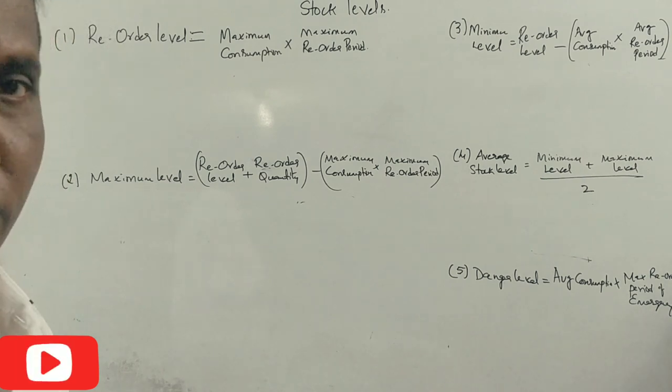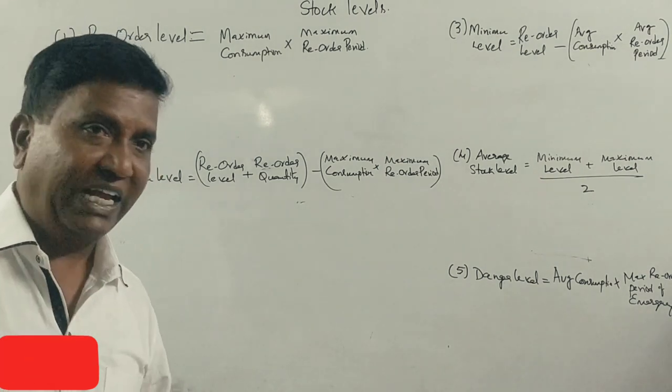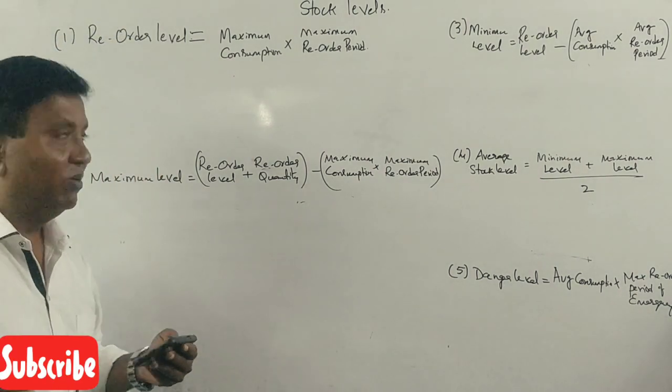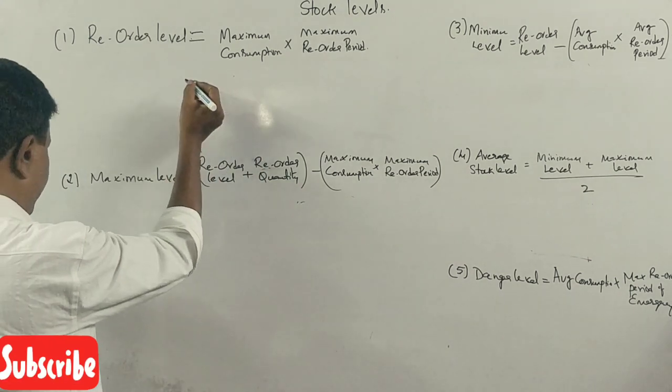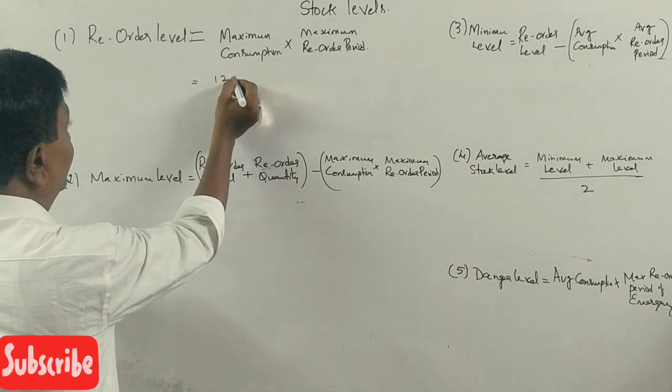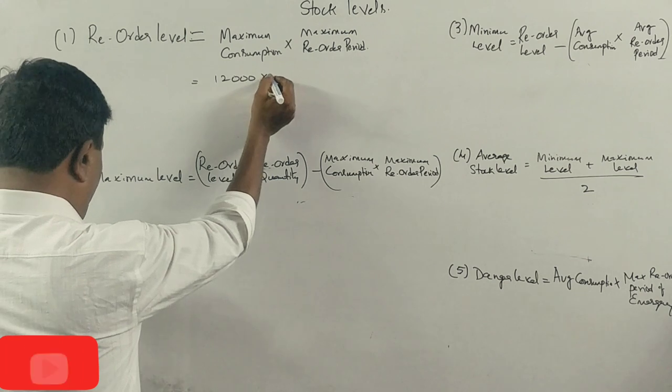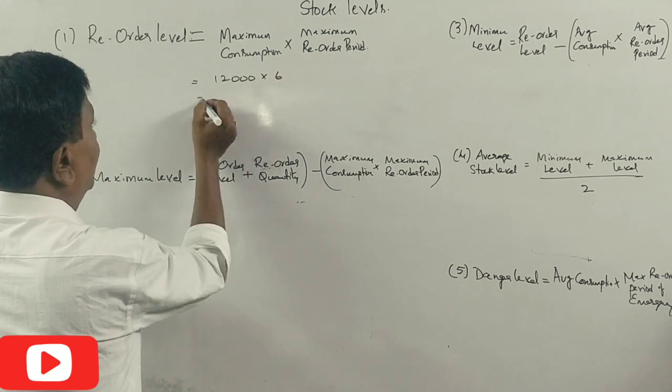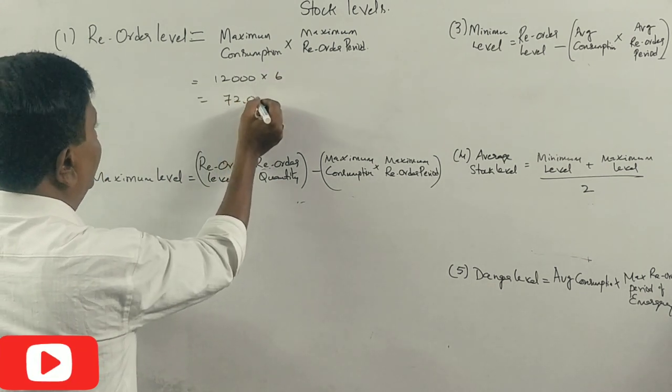These inventory levels are clear. First, maximum consumption 12,000 units and maximum reorder period is 6 weeks. 72,000 is the answer.